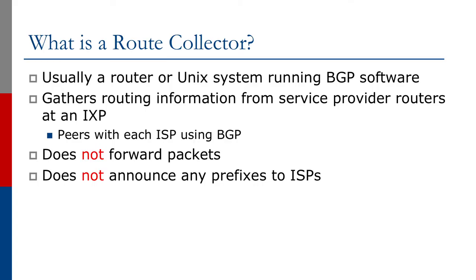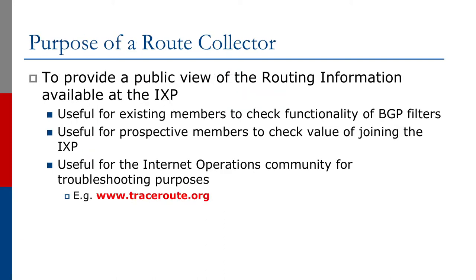A route collector is usually a router or a UNIX system running BGP software. It gathers routing information from service provider routers at the exchange point and peers with each ISP using BGP. A route collector does not forward packets and does not announce any prefixes to any ISPs. It simply collects the routing information available from all members, providing a public view of the routing information available at the exchange point.